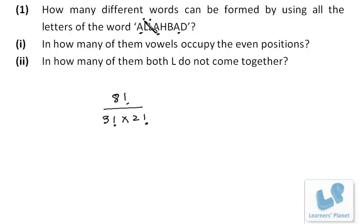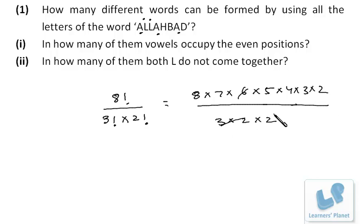In which we can make different words by rearranging all the letters of the word ALLAHABAD. So we can calculate that: 8×7×6×5×4 divided by 3×2 into 2. It's 5×4 is 20, 2×3 is 6, so 60×56, which equals 3360.